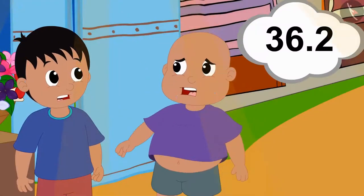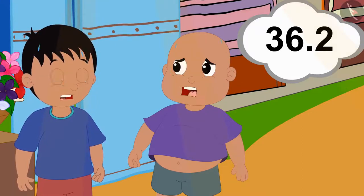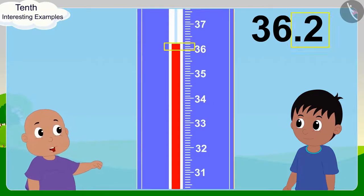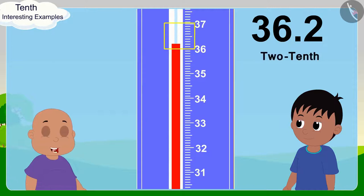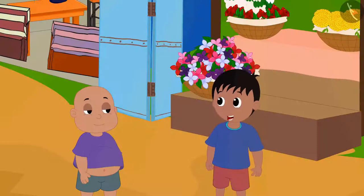Well, if tomorrow's temperature is 36.2 degrees Celsius, then we can say that 0.2 degrees Celsius is 2 tenths of a degree Celsius or 2 by 10 of a degree Celsius. Yes, Bablu said excitedly.